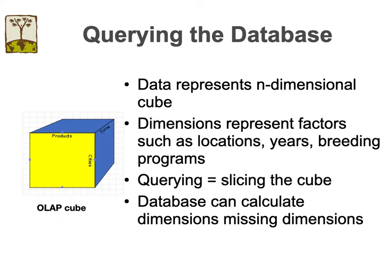Data in the database can be queried. We have seen many of the different search options in the search menu. Data in the database can also be considered as an n-dimensional cube with different dimensions represented by the factors in the data, such as breeding locations, years, breeding programs, traits, and so forth. One way to query the data is to conceptually slice this cube along the different dimensions. The result of the query will be an intersect, and with this approach very specific datasets can be generated for further analysis.